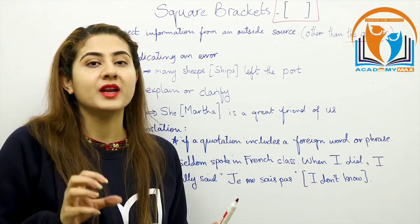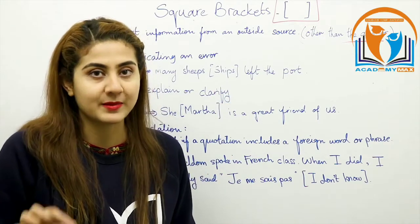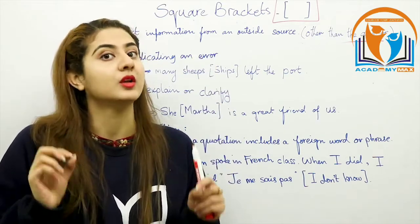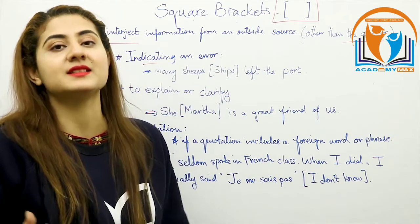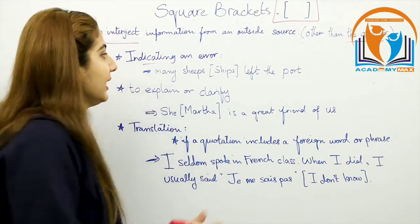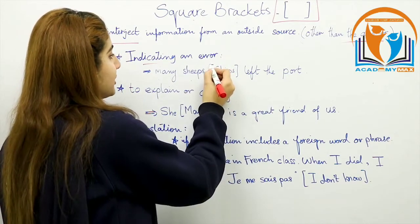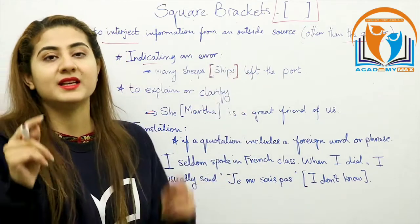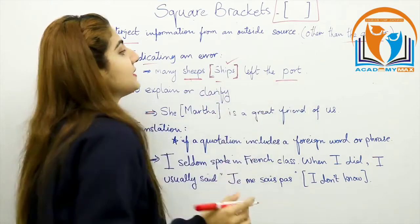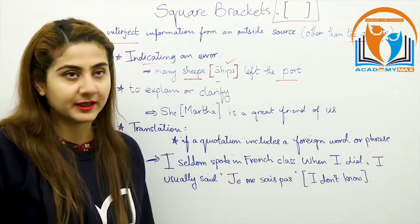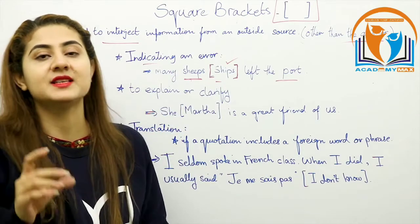If someone has a point to point out, they will use a square bracket for their comment. This is used to indicate an error. For example, if there is a spelling mistake — 'Many sheep left the port' — the outside source or editor writes the correction: 'ships'. Ships is the right word, so it becomes 'Many ships left the port.'